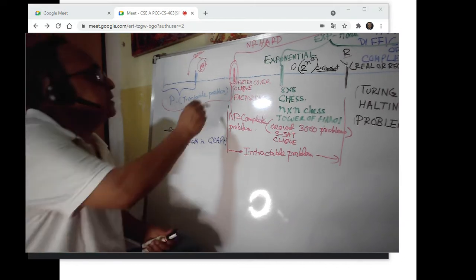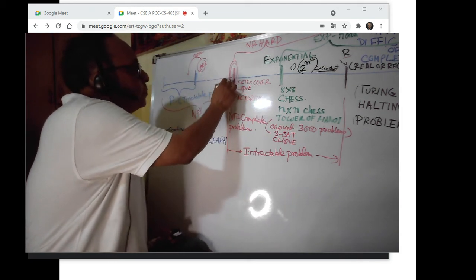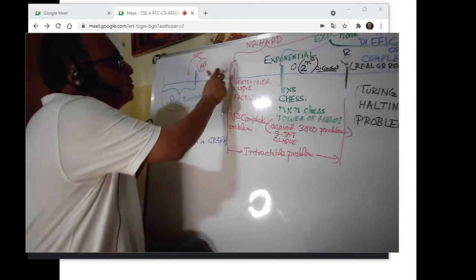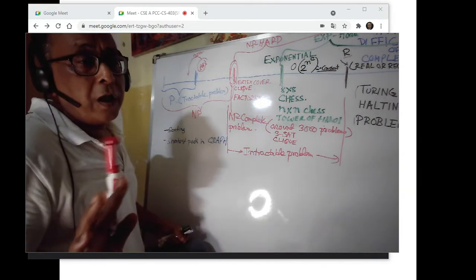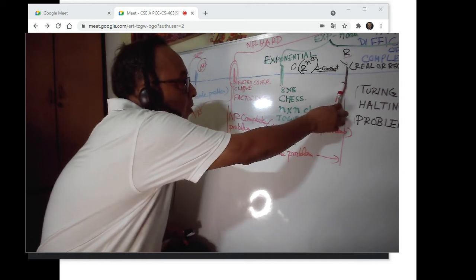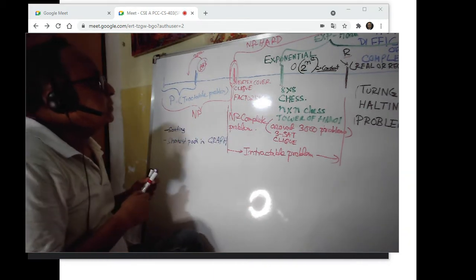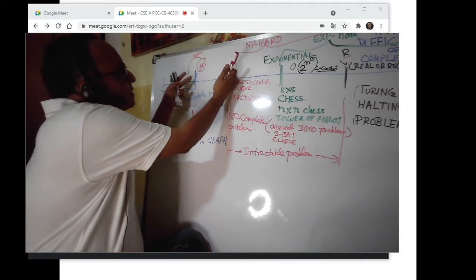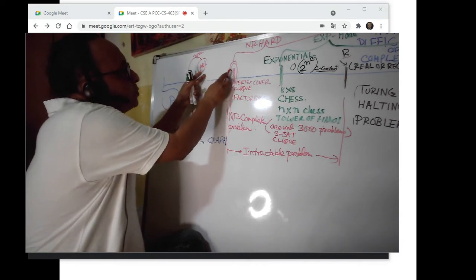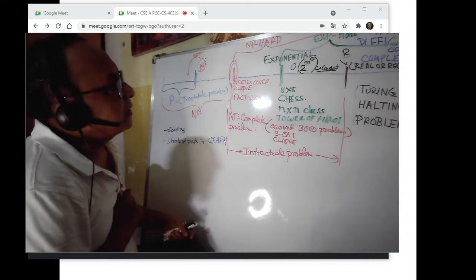This is the border region — these are the areas you call the border region where NP-complete and exponential problems meet. NP-complete has around 3,000 problems. This gap — whether P equals NP — is a purely research topic, whether they will collapse or not. Most computer scientists don't believe P equals NP, so there is a gap. In 2002, primality detection moved from NP to P.